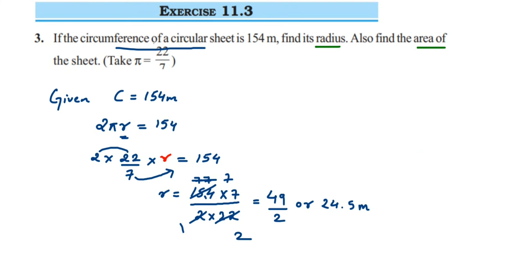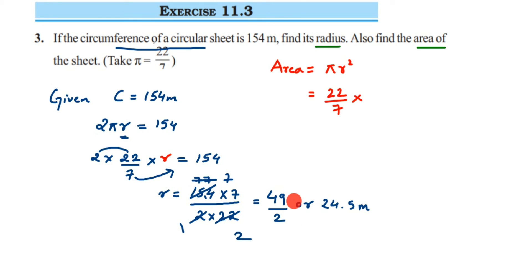Now for the second part: find the area of the circular sheet. The formula is Area = πr². That means π multiplied by r × r. Substituting: π = 22/7, and for r I'll use 49/2 instead of 24.5 to avoid decimals and allow cancellation. So Area = (22/7) × (49/2) × (49/2).